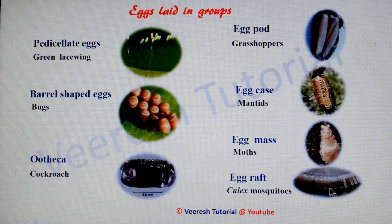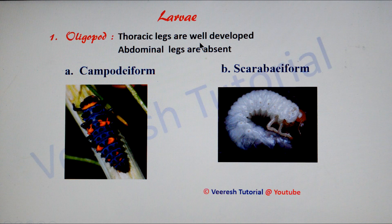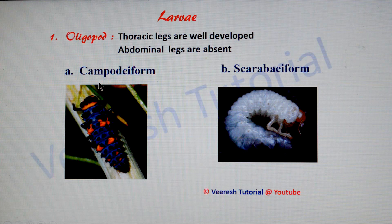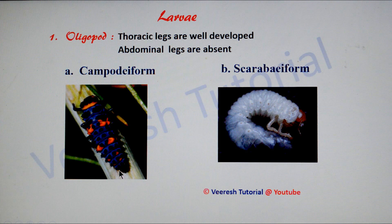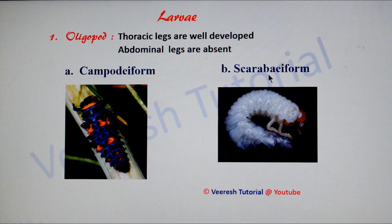The next immature stage is the larva — the active growing stage. There are three main types. First is oligopod larvae, where thoracic legs are well developed and abdominal legs are absent. There are two subtypes: campodeiform larvae, where the body is elongate, depressed dorsoventrally, head is prognathous, and a pair of abdominal cerci or caudal processes is present — these larvae act as predators, seen in ladybird beetle and antlion. The second subtype is scarabiform, where the body is C-shaped and thoracic legs are short — seen in rhinoceros beetle and dung beetle.